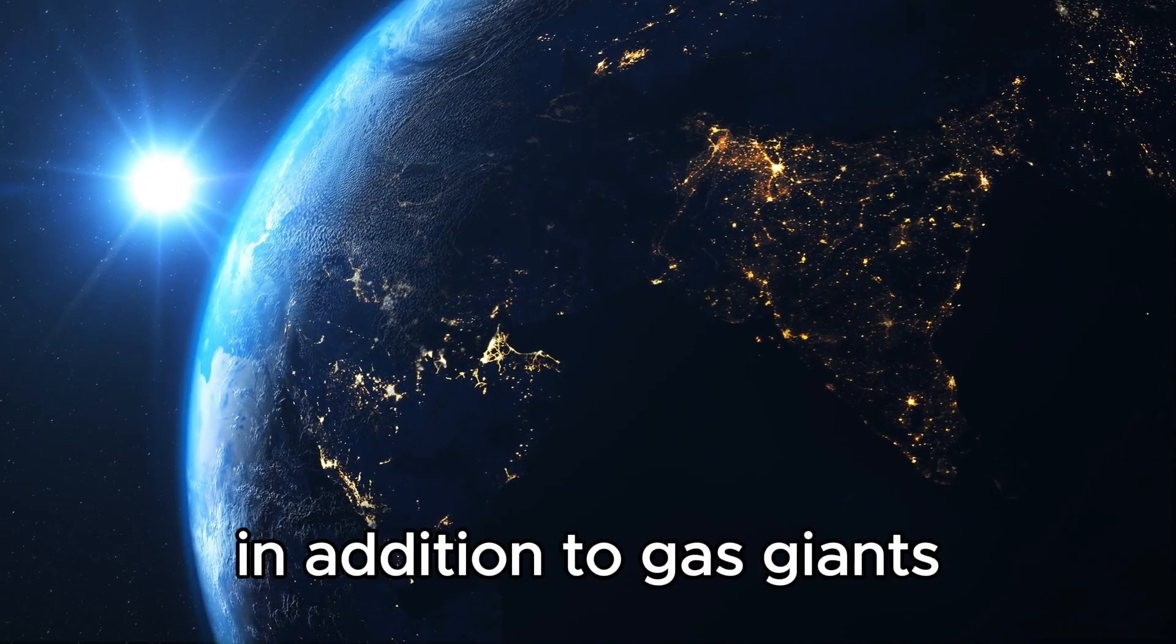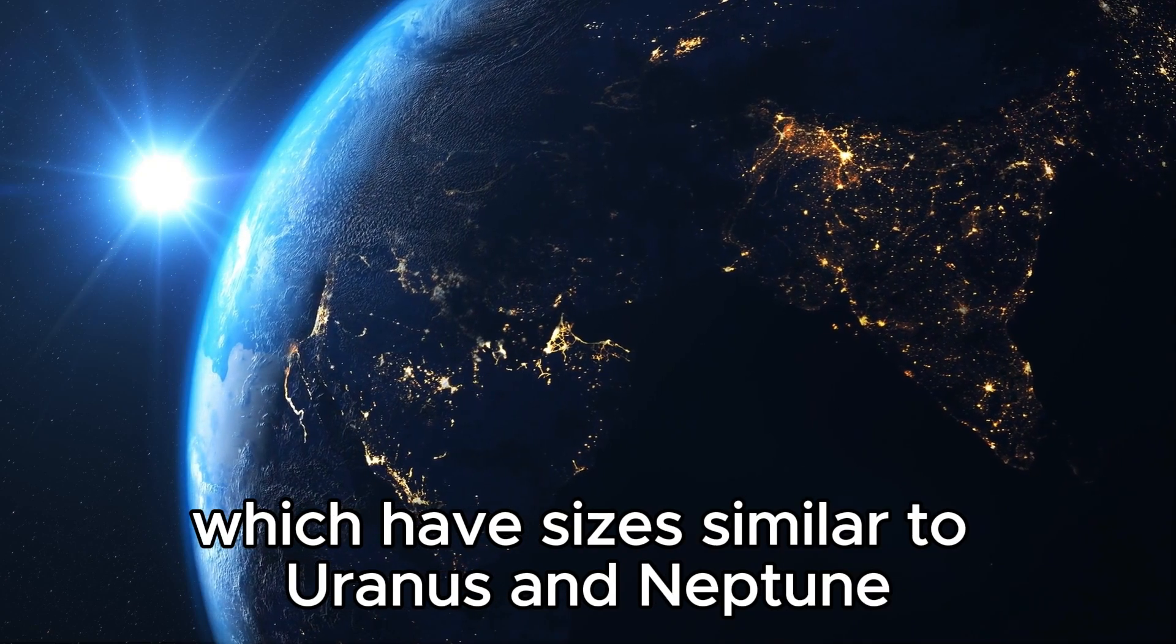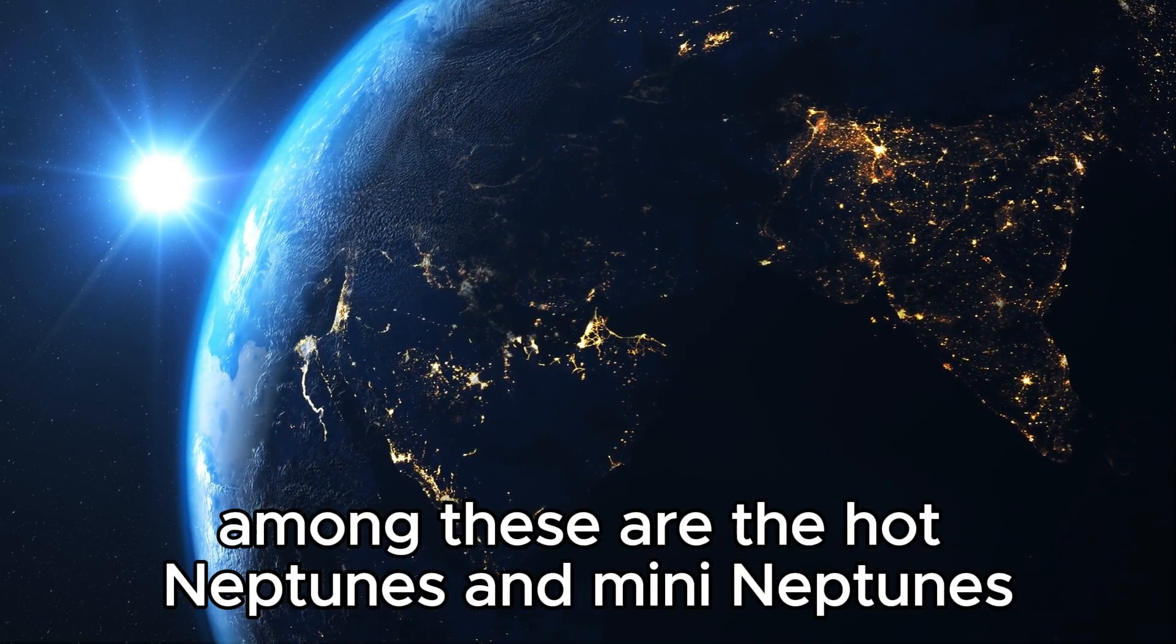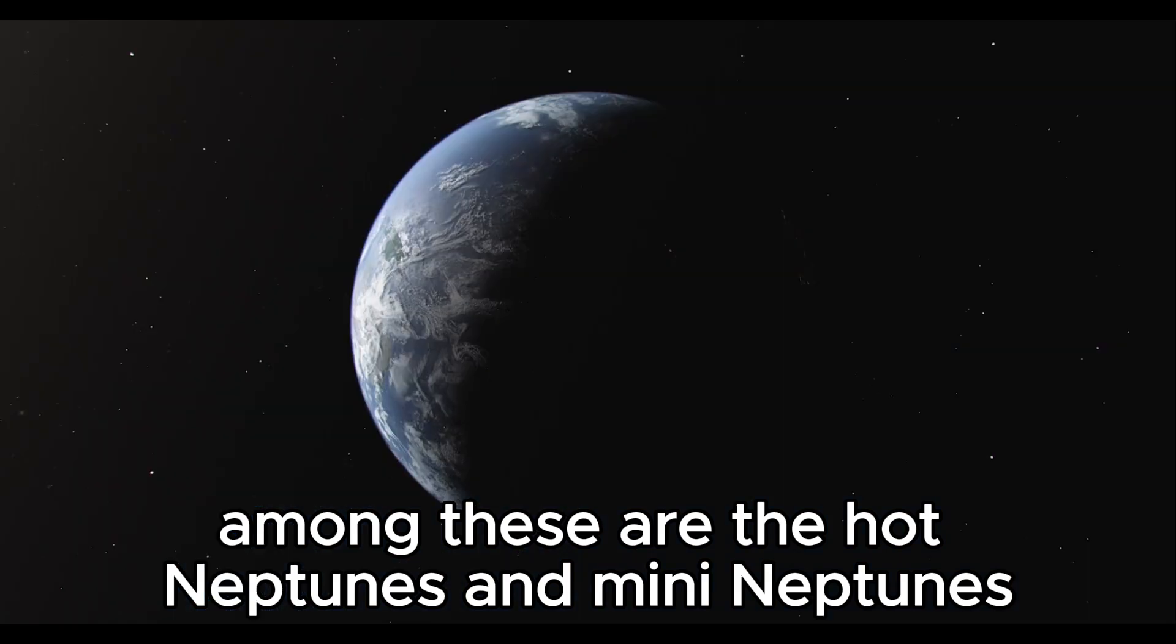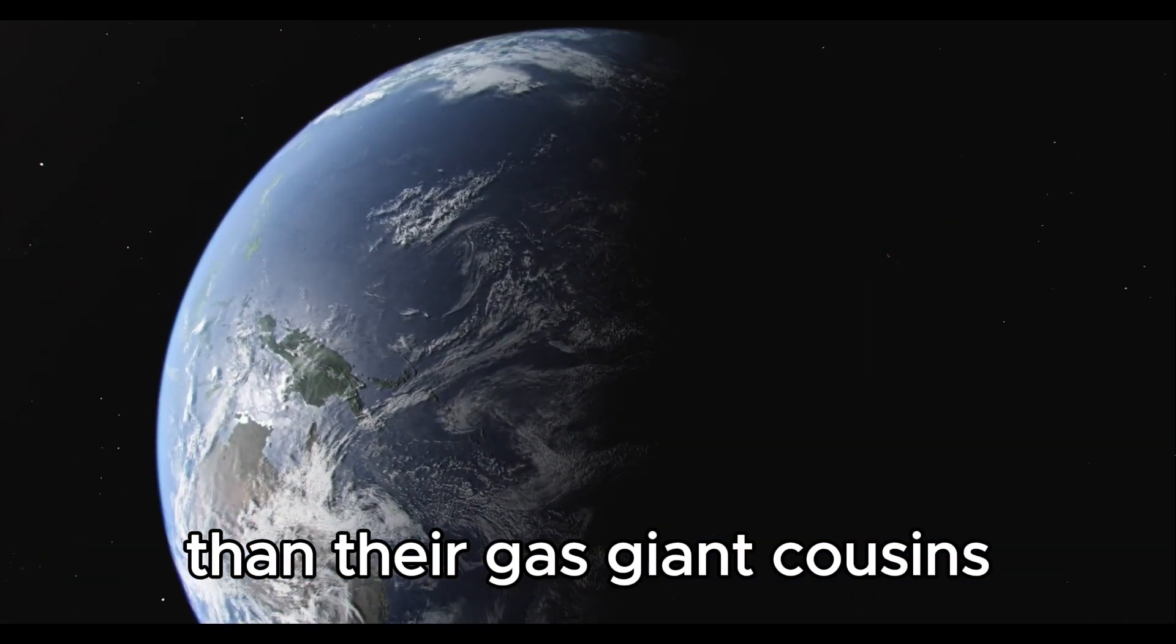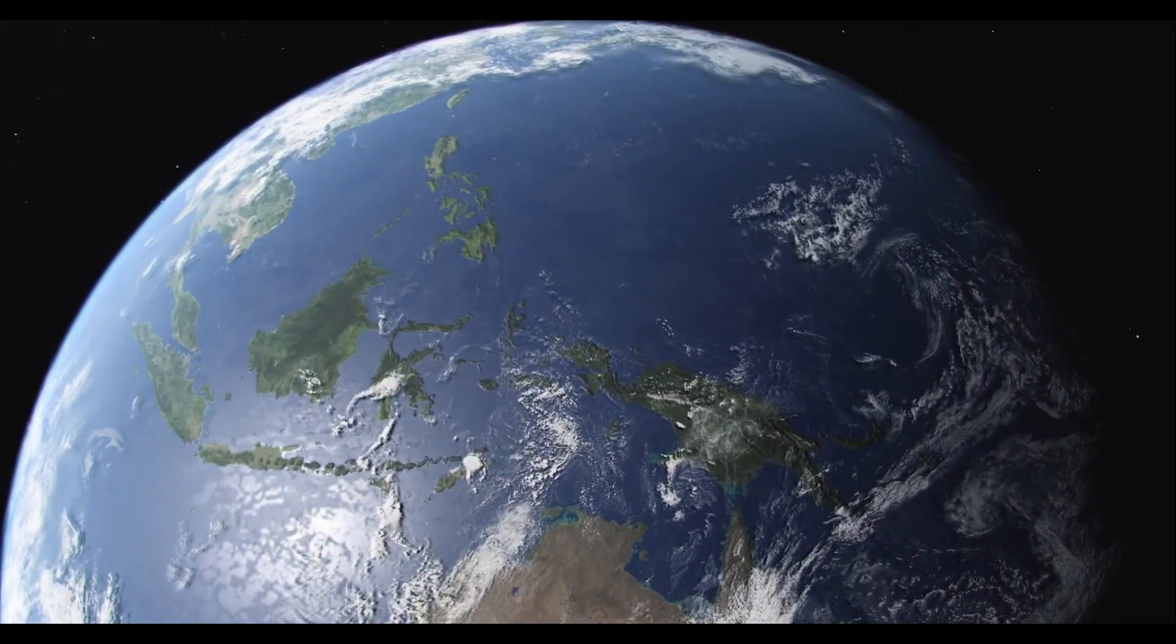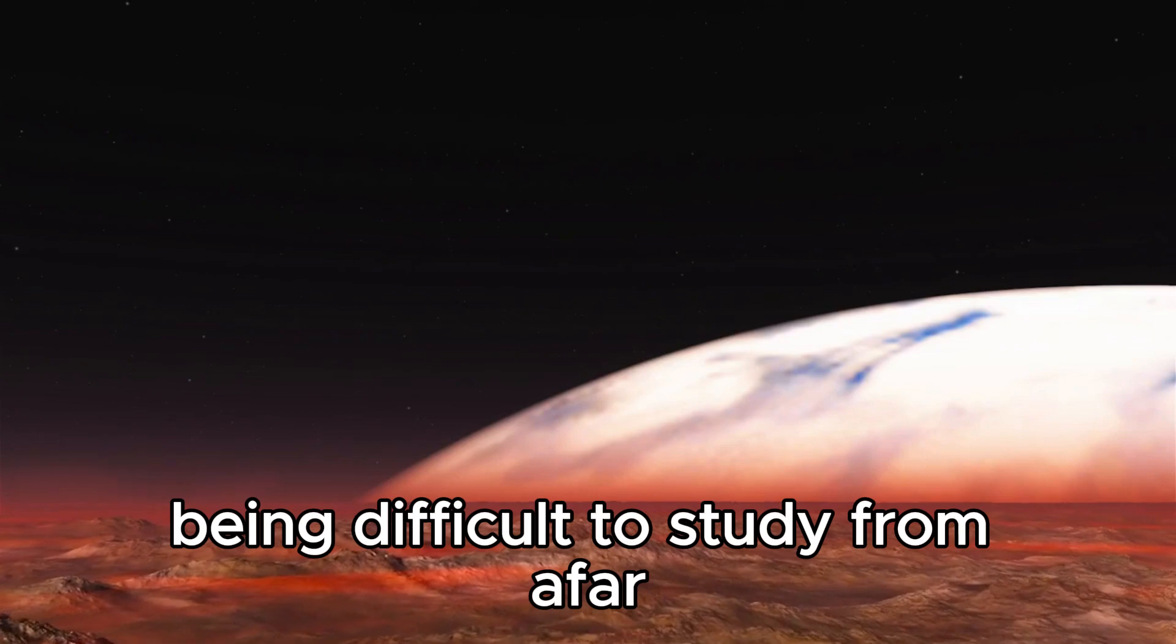In addition to gas giants, there are also Neptunian exoplanets, which have sizes similar to Uranus and Neptune. Among these are the hot Neptunes and mini-Neptunes, which are smaller and closer to their host stars than their gas giant cousins. These planets are often shrouded in mystery, with their atmospheres being difficult to study from afar.